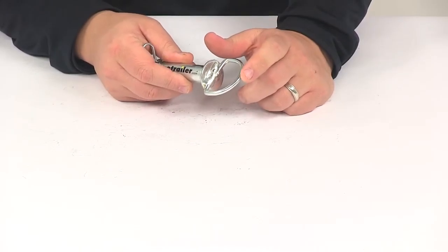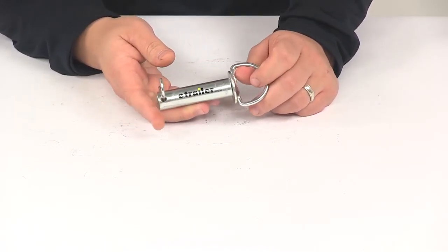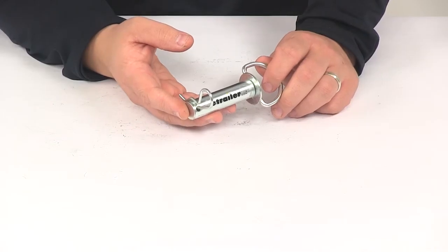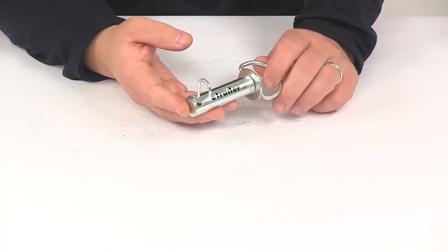Here on this end it's got the pull tab for easy installing and removing. The product's made right here in the USA. Again, this is designed for clevis mounts for inch and a quarter hitches.